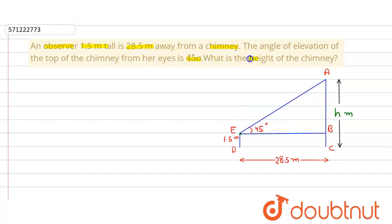Then we have to find what is the height of the chimney. First we consider let the height of the chimney be h meter. Now to find out the value of this height, we use the trigonometric ratio in the right angle triangle ABE.